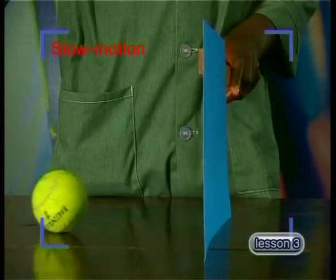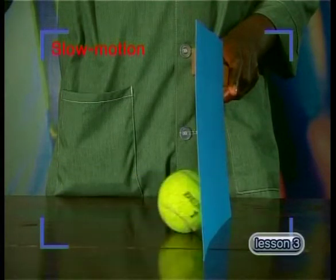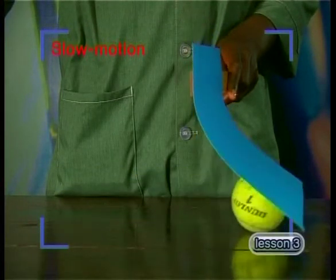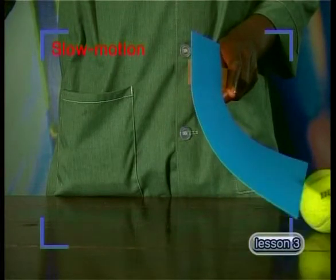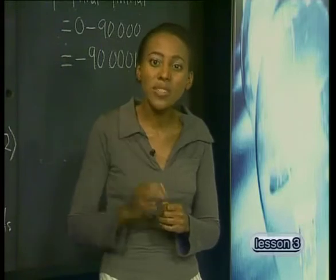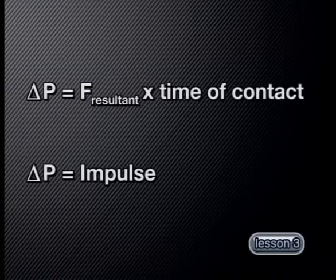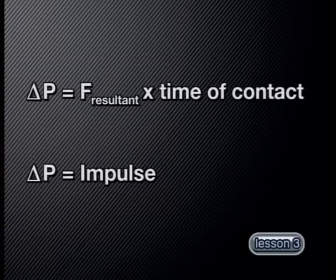The faster moving ball is in contact with the cardboard for a longer period of time. So the same force had to be applied for a longer period of time to make the ball stop. This is a very important scientific concept. The change of momentum of a body can also be calculated by multiplying the resultant force by the time of contact between the two interacting bodies.